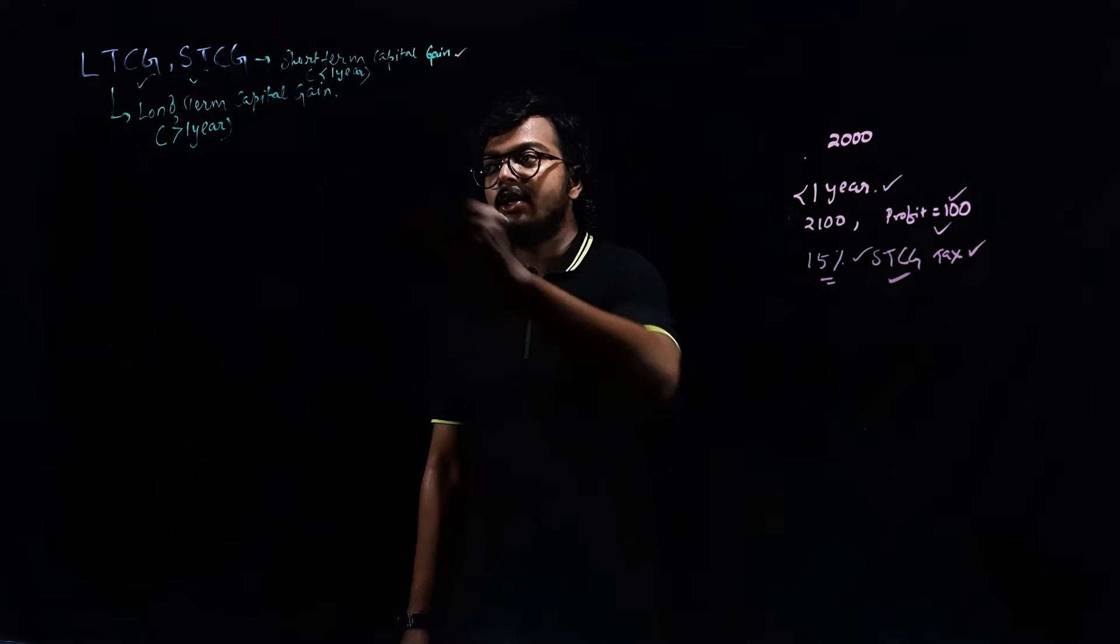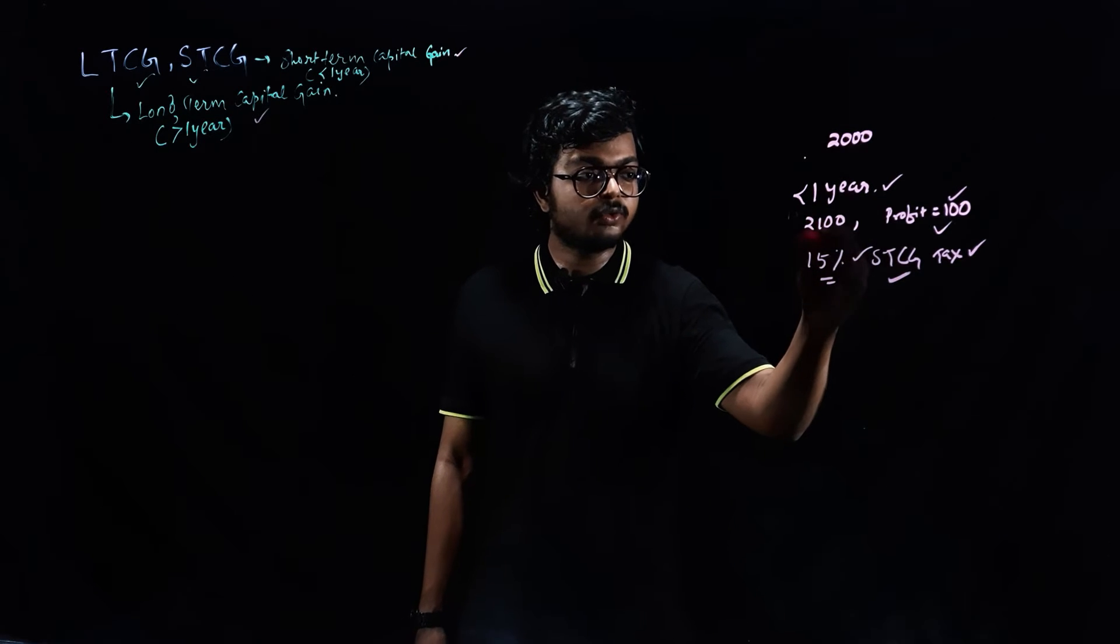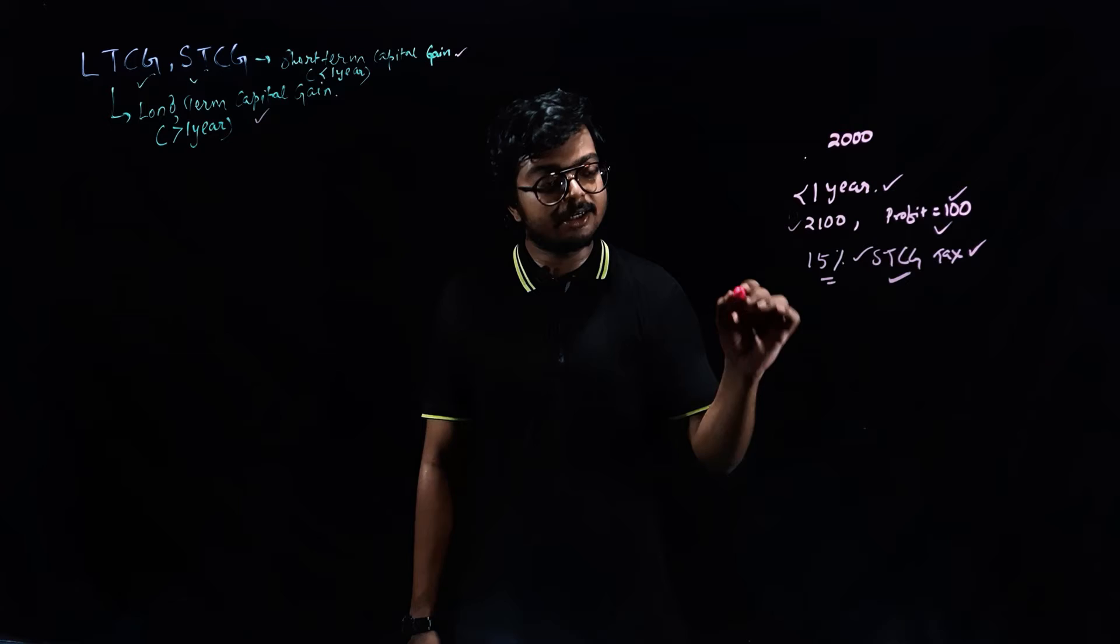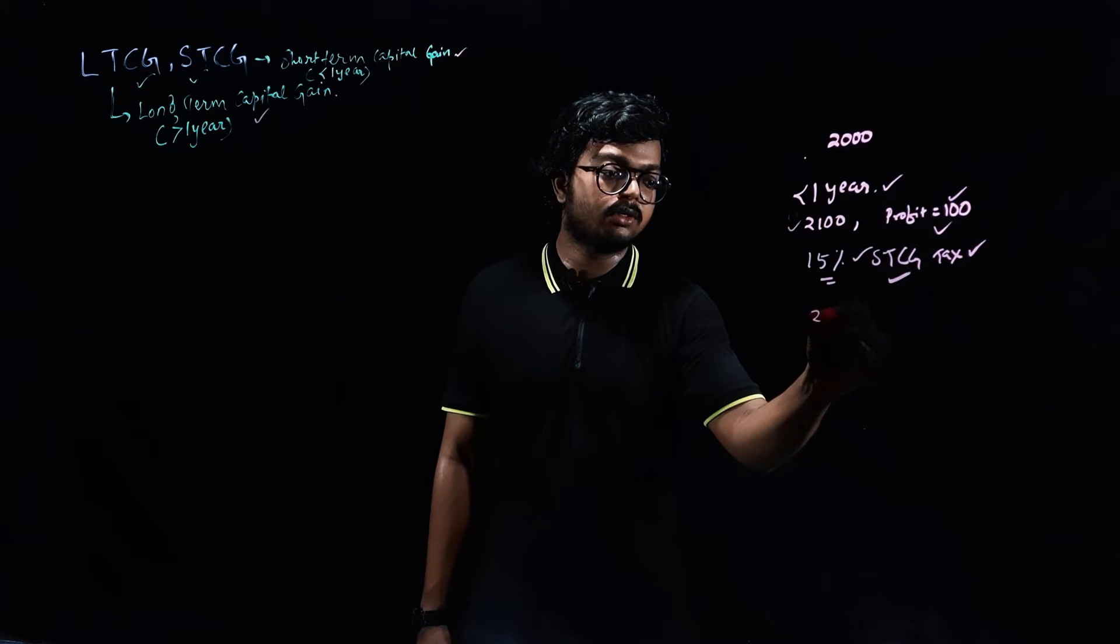Now, let us see long term capital gain. Long term capital gain is beyond one year. Say for example, you sold this Reliance shares at 2100 but beyond one year. Say for example, you sold at around two years.